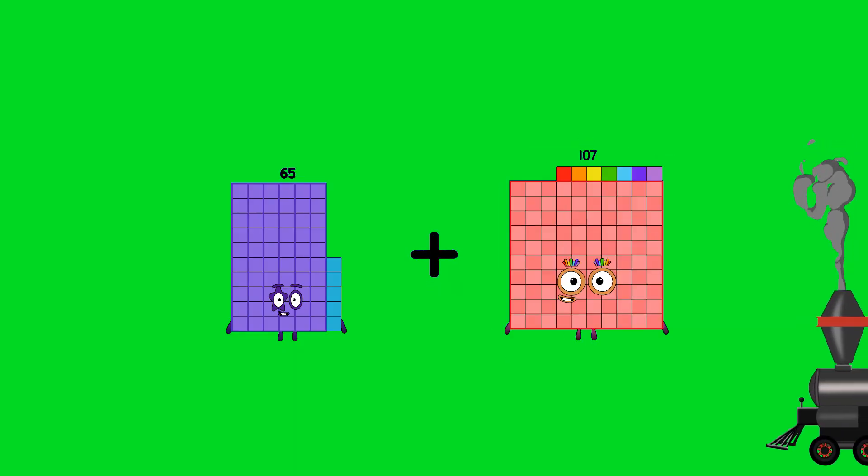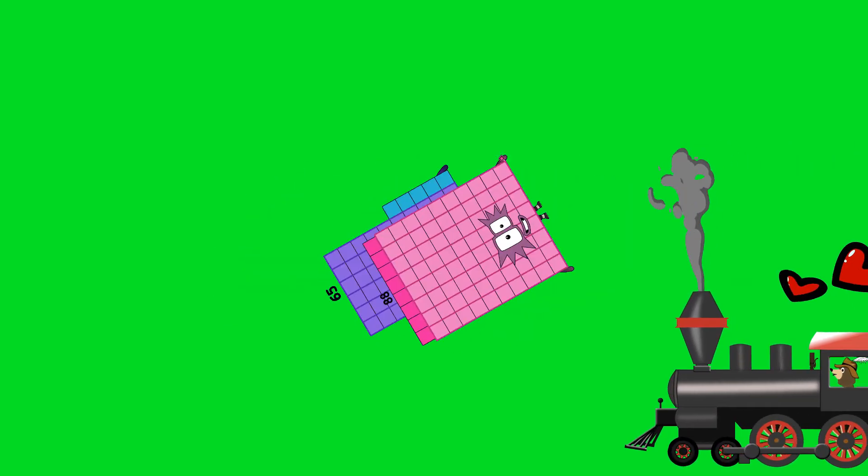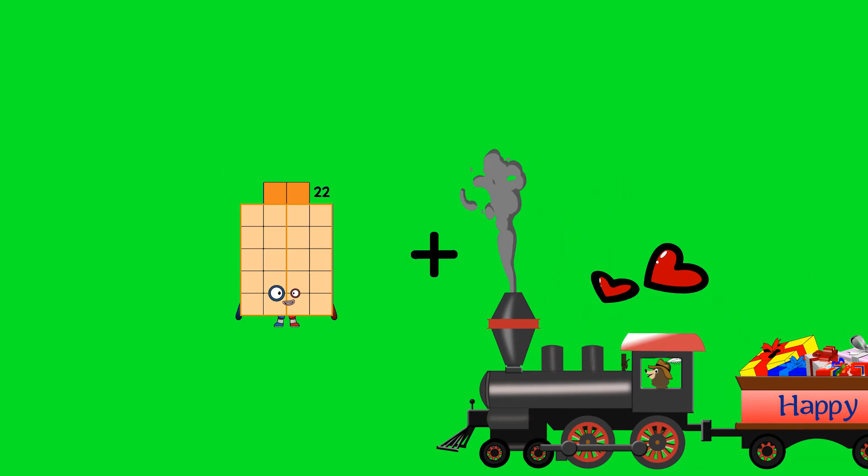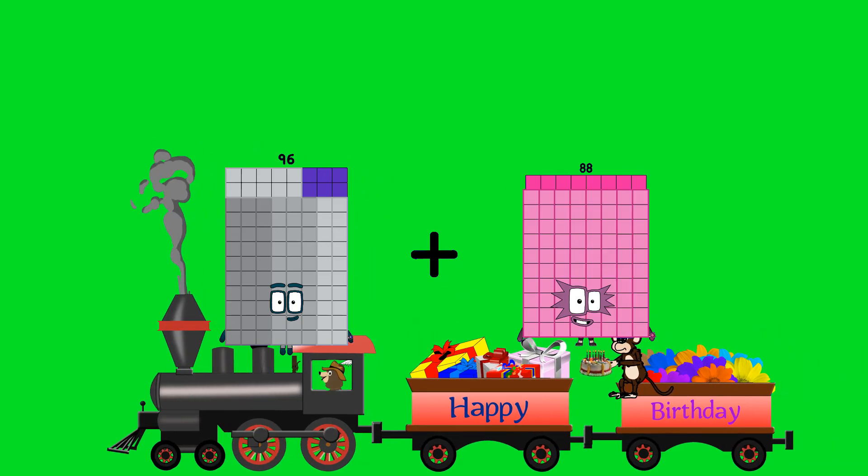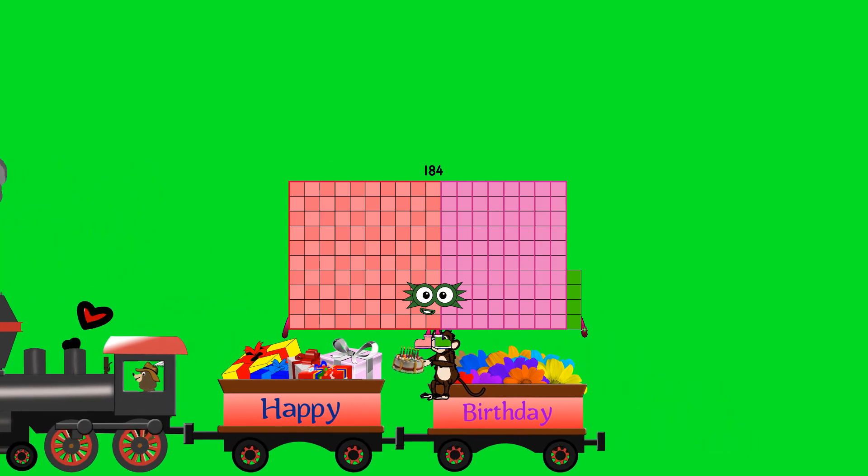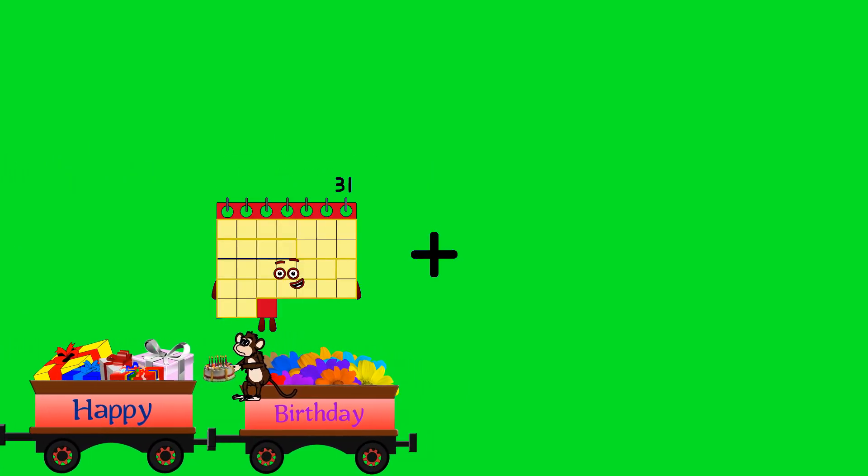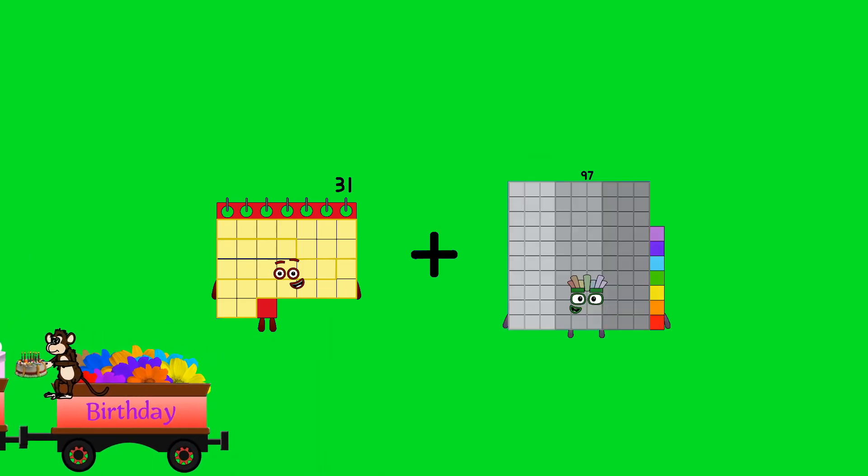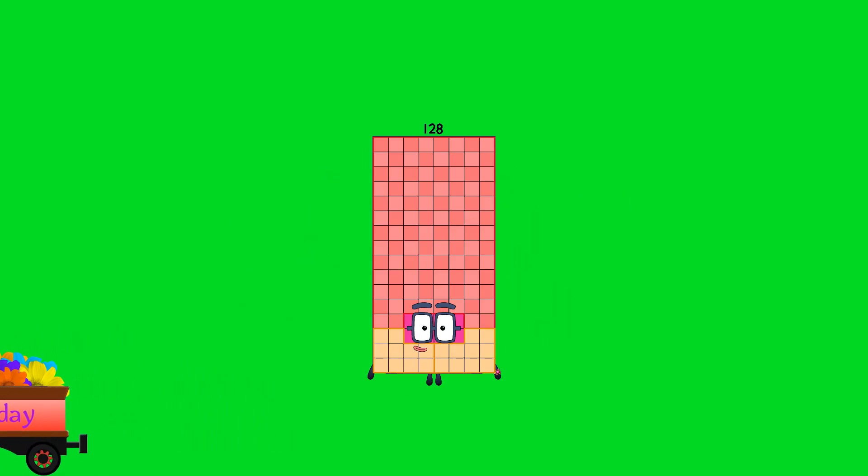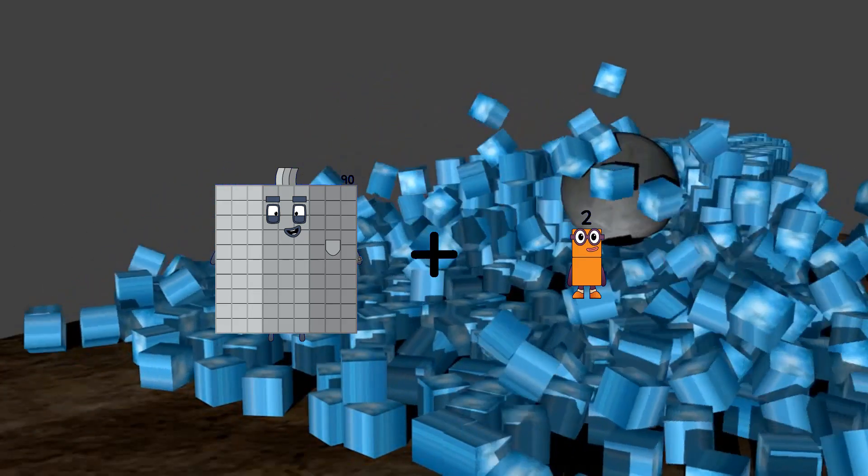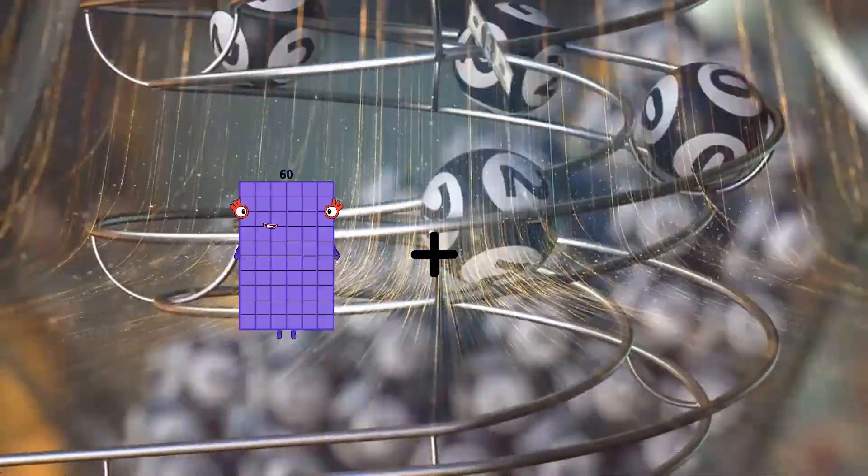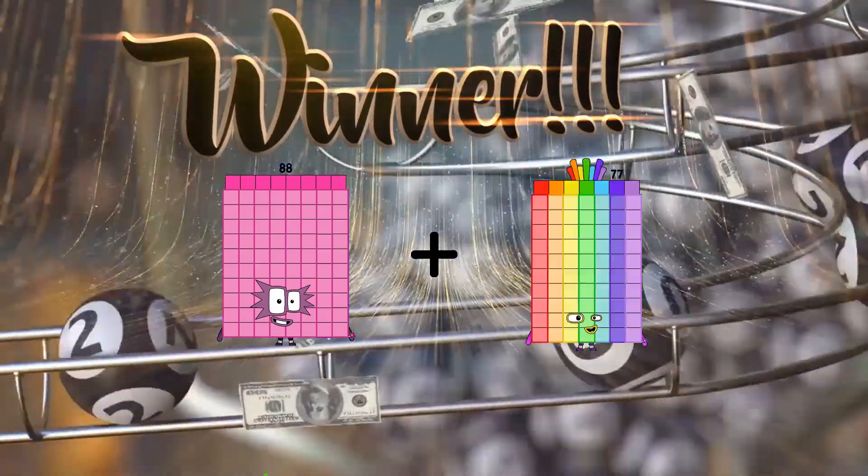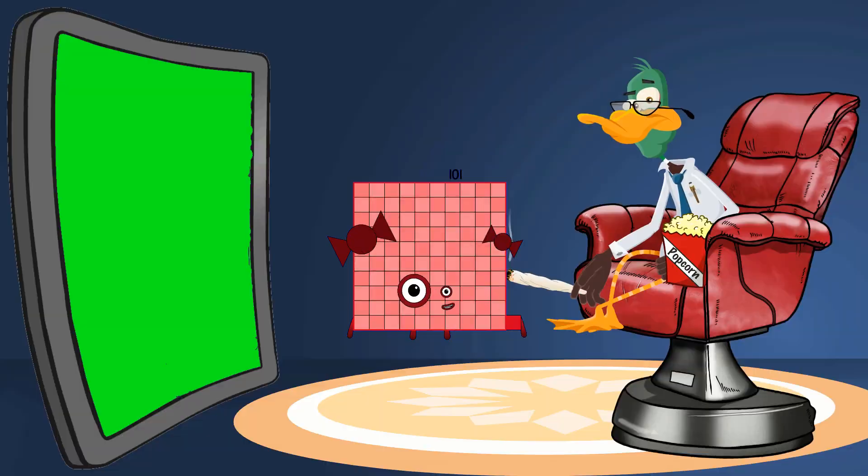65 plus 88 equals 153. 96 plus 88 equals 184. 31 plus 97 equals 128. 103 plus 17 equals 120. 88 plus 13 equals 101.